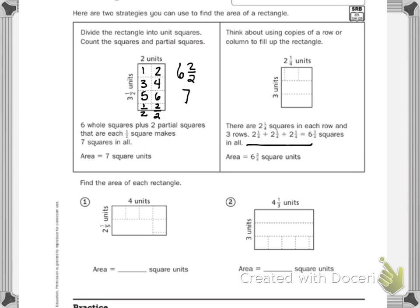So we also know that area equals length times width. So we could do for the three and two and one fourth units, we could do three times two we know is six and then do the repeated addition with the fractions. So that would come out to be six and three fourths.